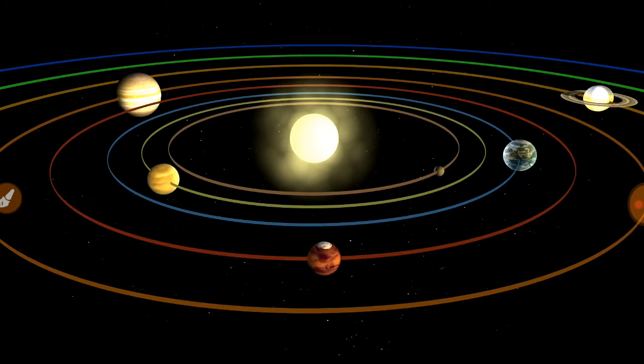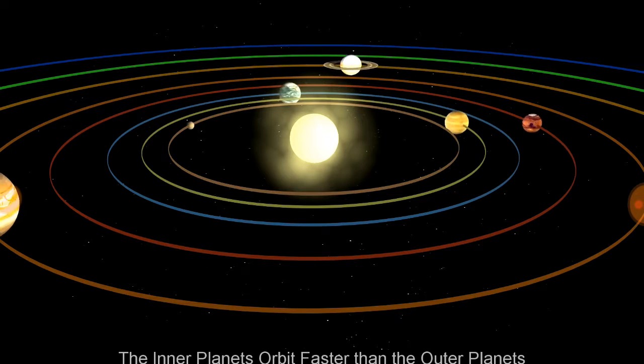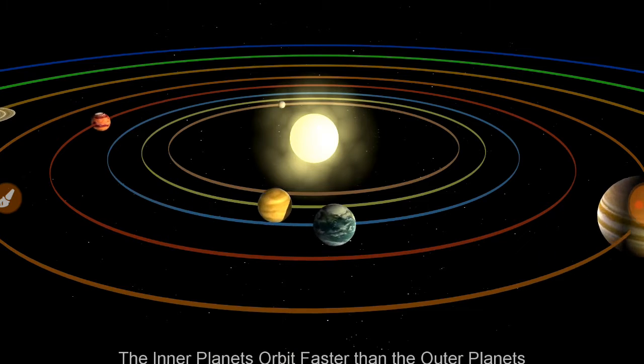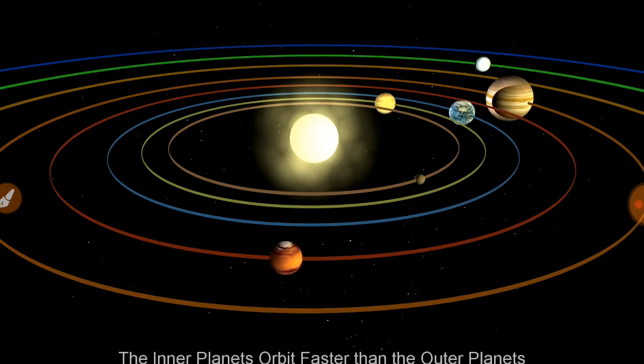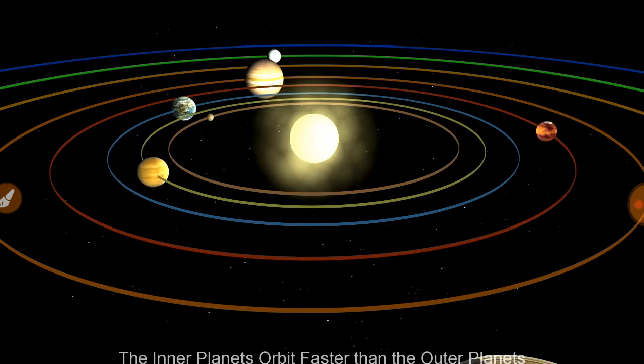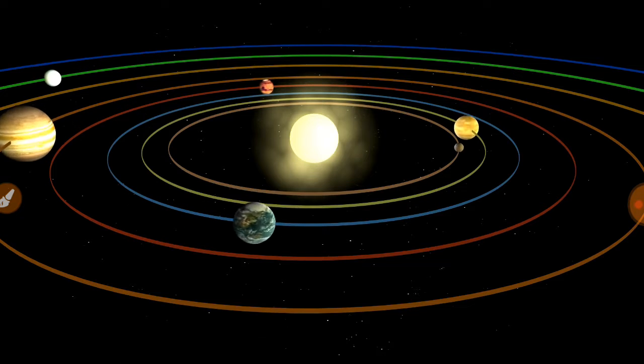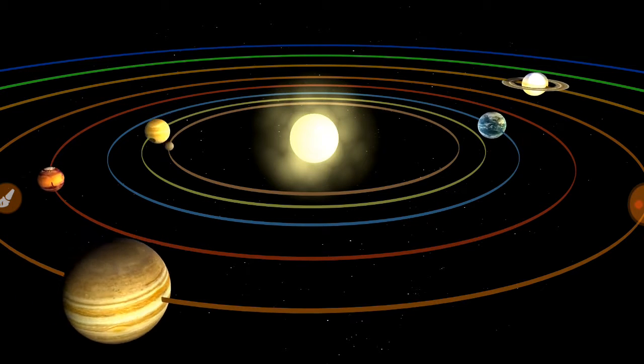If we talk about the planets, there are eight planets in our solar system which move in a fixed path around the sun and these elongated paths are called orbits.